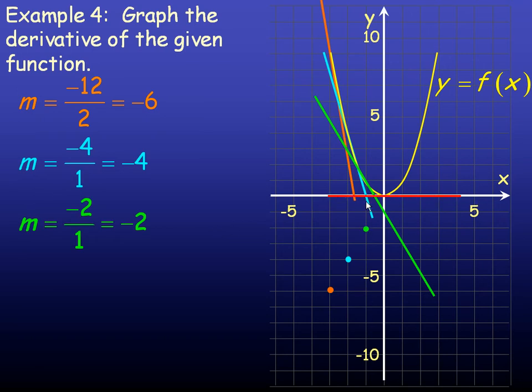At the vertex, the tangent line is horizontal, so its slope is 0. We'll put a dot at 0. And then at 1, over 1, up 2, so the slope is 2 there. Put a dot at 2.